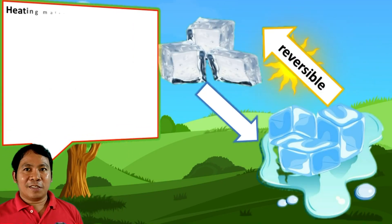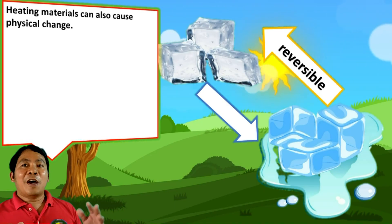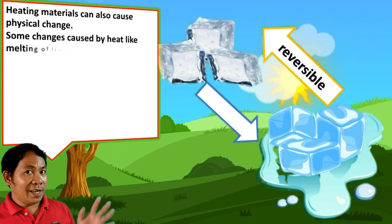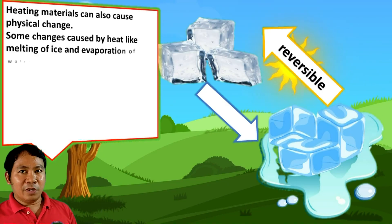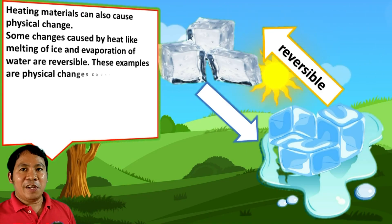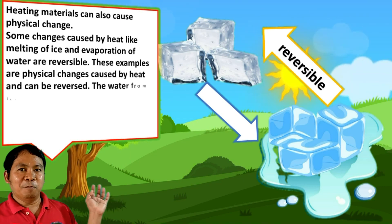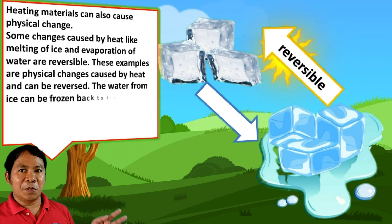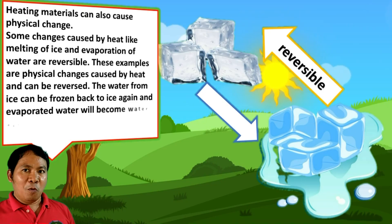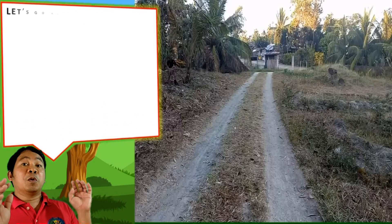Heating materials can also cause physical change. Some changes caused by heat, like melting of ice and evaporation of water, are reversible. These are physical changes caused by heat and can be reversed — water from ice can be frozen back to ice again, and evaporated water will become water again when it condenses and falls as rain.